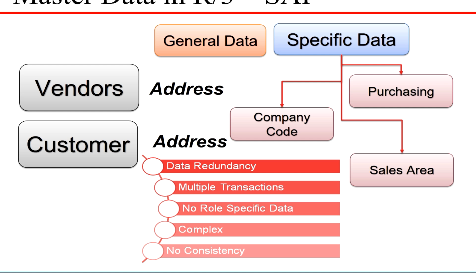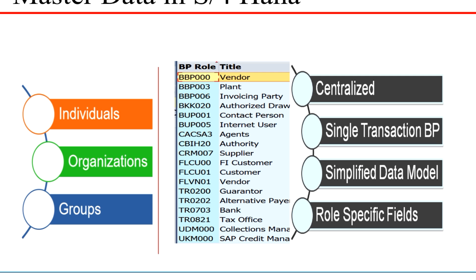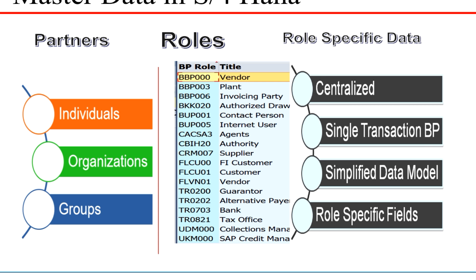To resolve all this, SAP came up with a simplification in SAP S4 HANA. In S4 HANA, the entire data related to your partners — whether individuals, organizations, or groups — is organized based on roles. The same individual can be a vendor, an agent, an authority, a supplier, or an FI customer depending on what role they are performing. When you create role-based specific data, you eliminate redundancy and centralize the creation of vendors and customers.